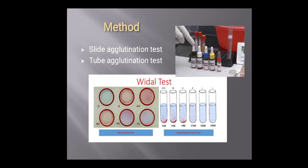Mix thoroughly the contents of each well uniformly over the entire circle with a separate mixing stick or applicator stick. Then rock the slide gently back and forth and observe for agglutination microscopically.